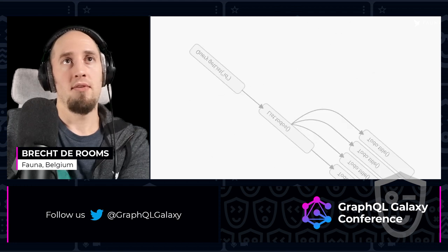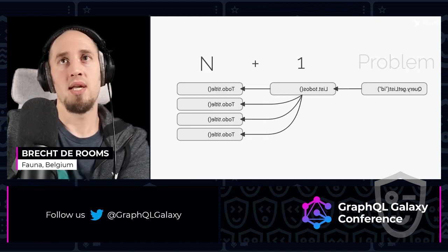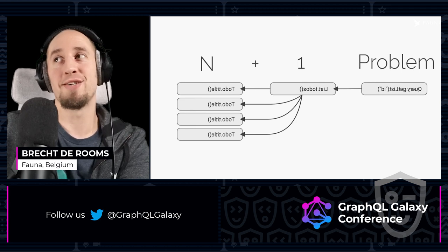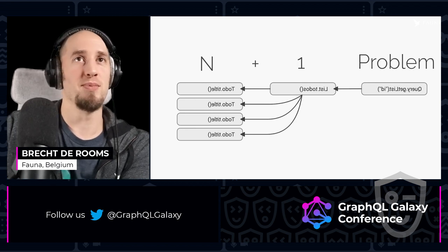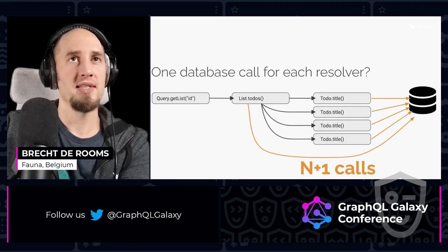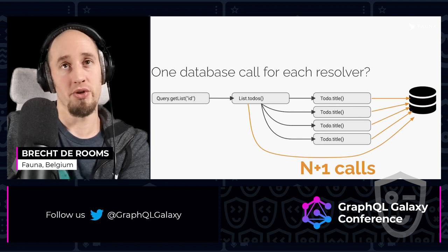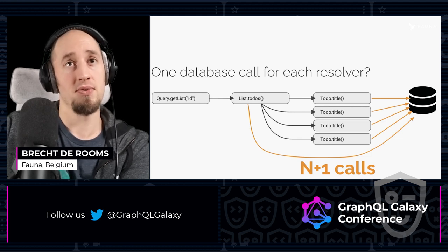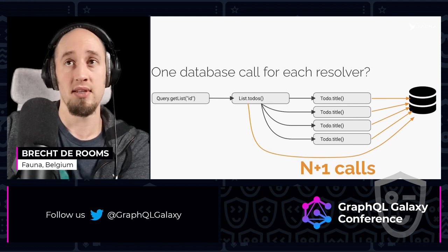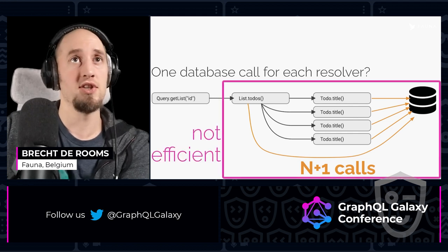And if we turn this around, we get n plus 1, and it's basically a problem. This is actually called the n plus 1 problem — that's why I turned it around. And when is this a problem? Basically if you're going to call the database for each of these resolvers, because then you get n plus 1 database calls, which is not efficient.